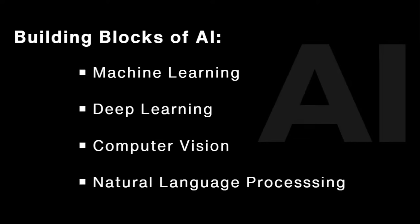So what are the building blocks of AI? We have machine learning, deep learning, computer vision, and natural language processing. If you understand these four, then you can understand how AI works. AI is interesting, but how does it work? You need to understand machine learning, deep learning, computer vision, and natural language processing. Let us see them one by one.